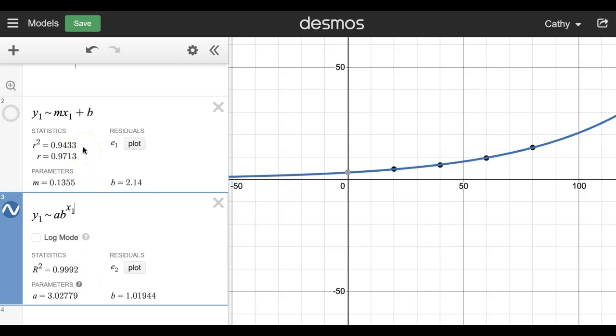So this is a better model than 0.9433. You can see how this runs right through every point, so I think we can conclude that we have an exponential model and this is the best way to model it.